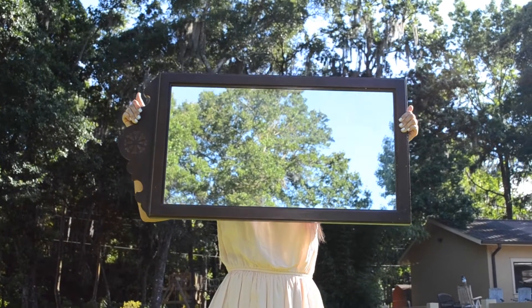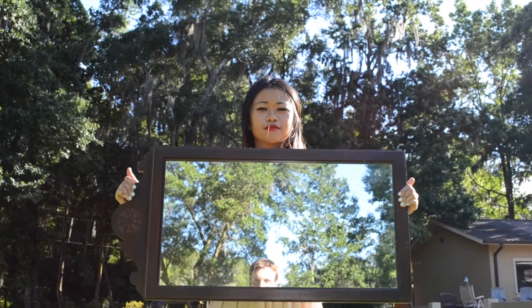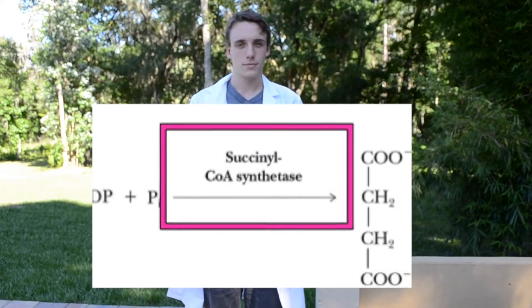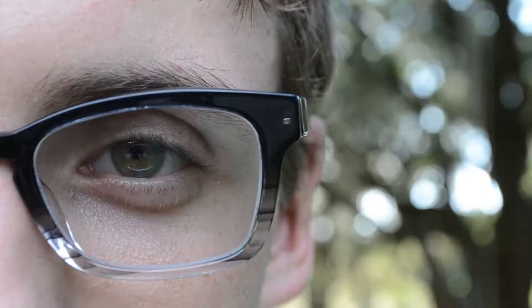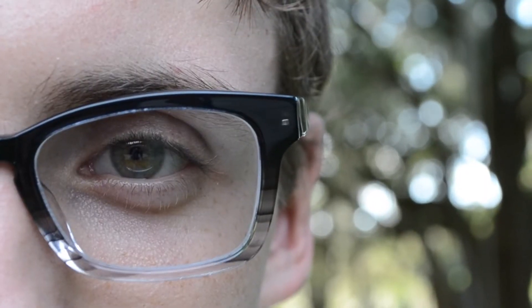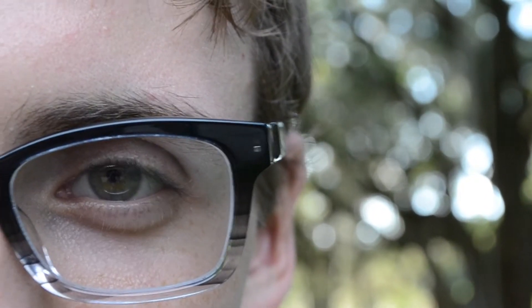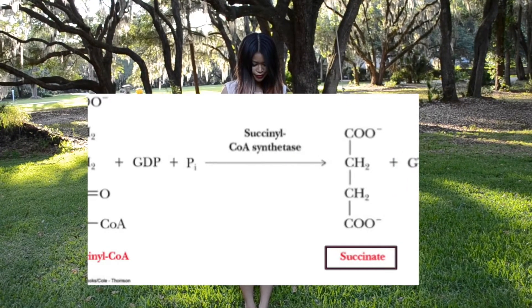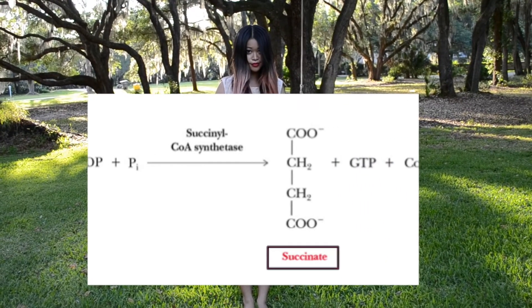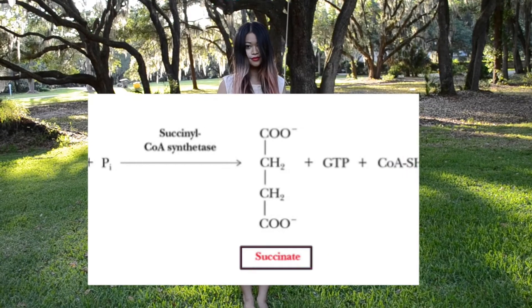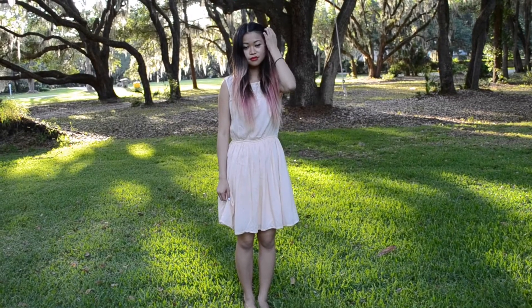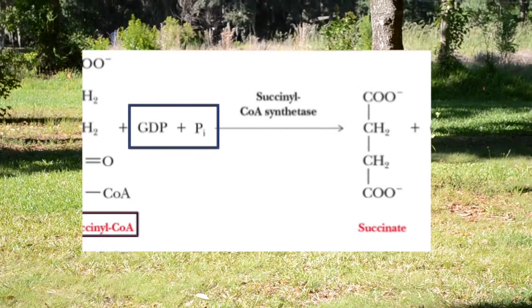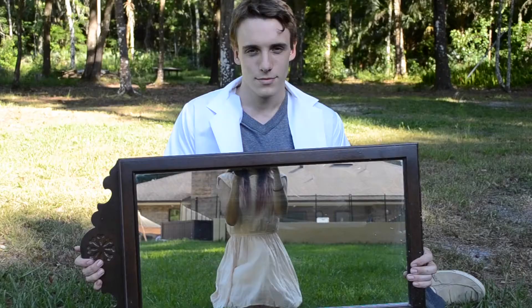Step 5: succinyl-CoA synthetase catalyzes the reaction, forming succinate, GDP, and releasing CoA, using GDP, phosphate, and succinyl-CoA.